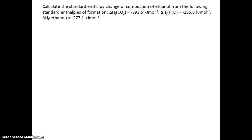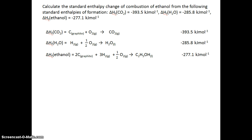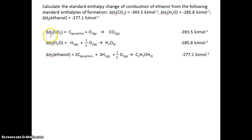The first step is always to write out the equations which relate to the data you've been given. In this case, we've been given the enthalpy change of formation of carbon dioxide, water, and ethanol. So we need to write out the equations which relate to them. The enthalpy change of formation of carbon dioxide is the formation of carbon dioxide from its elements in their standard states, and the same obviously for water and for ethanol.